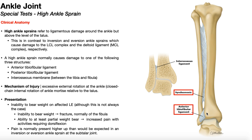High ankle sprains normally cause pain anteriorly, and it is usually more lateral than medial. In most cases, the pain with a high ankle sprain is going to be higher up and anterolateral.